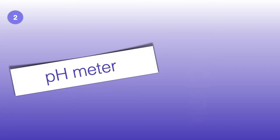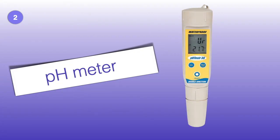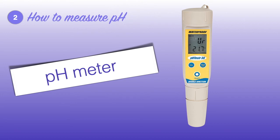A second way to measure pH is using a pH meter. Remember at the start of the video I mentioned acids and bases are electrical conductors? The pH meter measures the difference in electrical potential between a pH electrode and a reference electrode. There are various types of pH meters, and some can actually hook up to your laptop and iPad, measuring and recording the pH levels through an app.